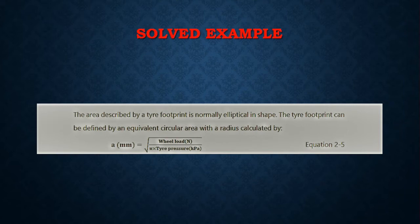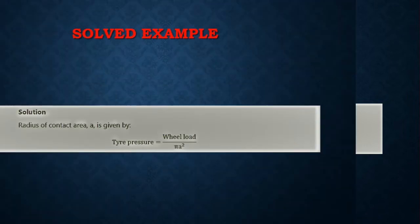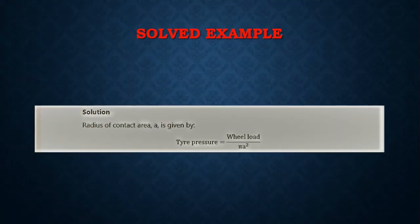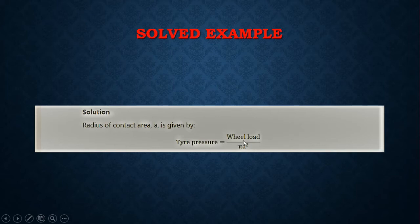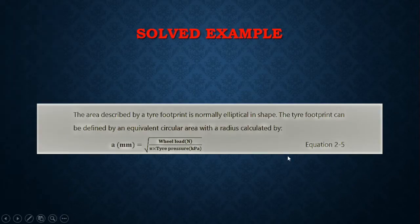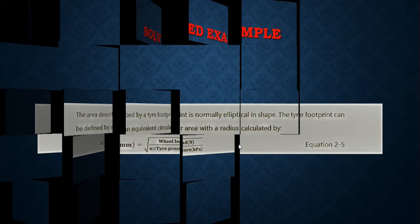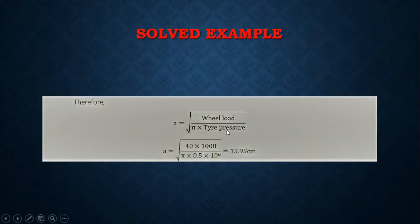To make 'a' the subject of the formula, you multiply both sides by a squared, then divide by tire pressure. To isolate 'a' alone, you take the square root of the wheel load divided by pi multiplied by the tire pressure. So the formula becomes: a equals the square root of wheel load divided by (pi times tire pressure).